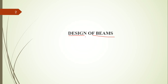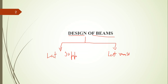We have already seen the design of two types of beams depending on lateral stability: one is the laterally supported beam, for which we have already seen the design steps, and the other is the laterally unsupported beam. For laterally unsupported beams, in the previous session I told you which clauses and formulas to refer to, and based on that you design the beams.